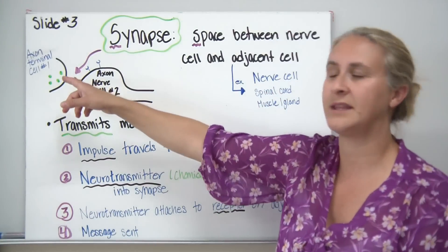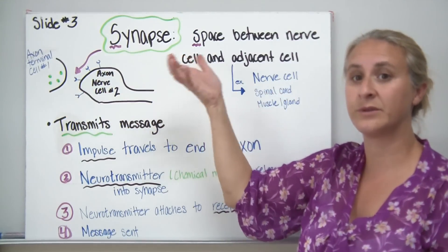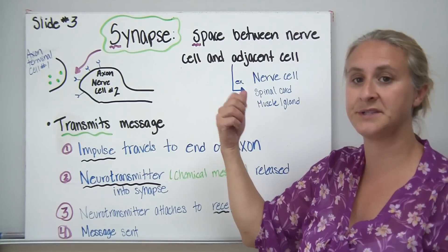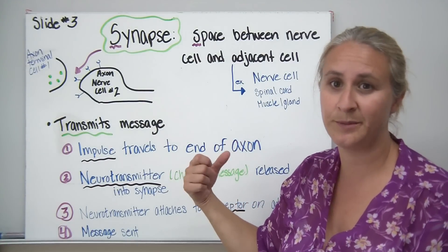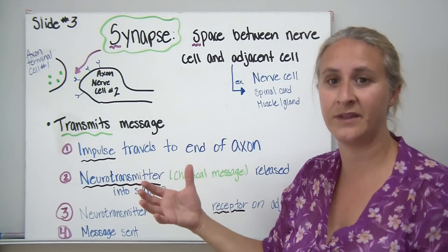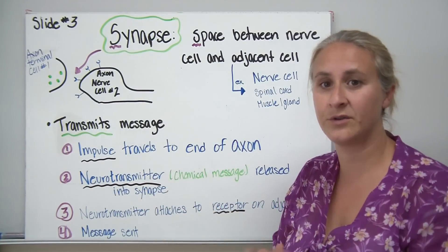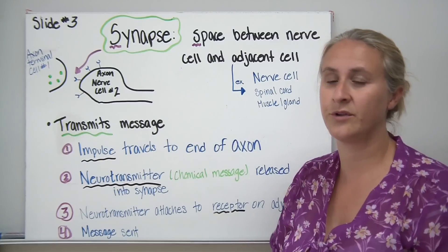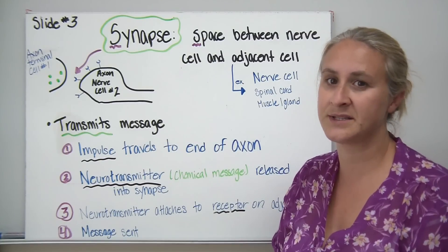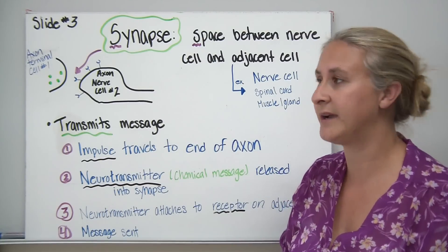When the signal reaches the axon terminal again, it releases neurotransmitters that may attach to a muscle, sending the signal through the muscle cell to tell it to contract.